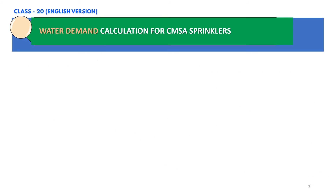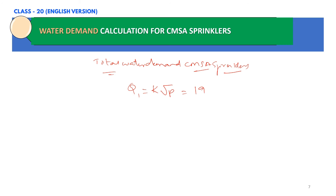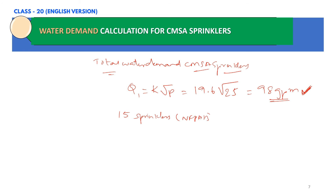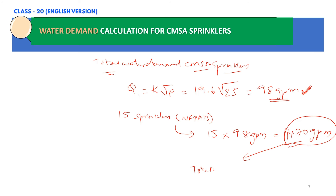In this slide, we are going to calculate the total water demand considering CMSA sprinklers. First, we calculate the demand from one sprinkler using the formula Q = K√P. K is 19.6 and P is 25 PSI, giving a flow of 98 GPM from one sprinkler. Since we are considering 15 sprinklers as per the NFPA 13 table, we multiply 15 by 98 GPM. The total sprinkler water demand is approximately 1,470 GPM.